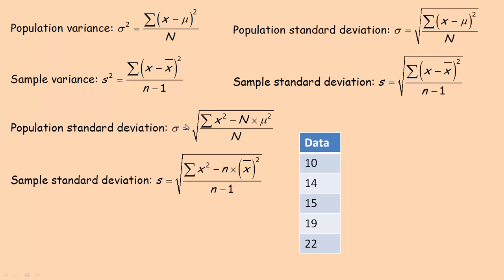It's pretty cumbersome to manually calculate standard deviation, so there are some shortcuts if you don't have access to technology — here are the two shortcuts, depending on whether you're working with population or sample. You square all the data points and add them all up — that's what the uppercase Greek letter sigma means. You subtract from that the number of data points times the mean squared, and divide by the number of data points, then take the square root. For the sample it's the same except you divide by n minus 1.